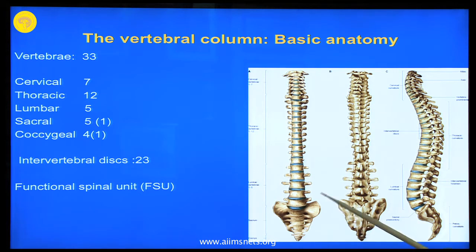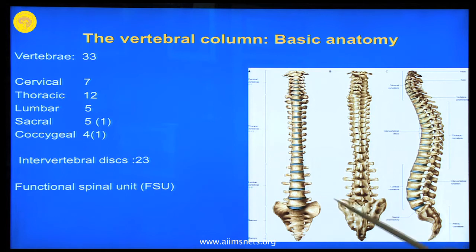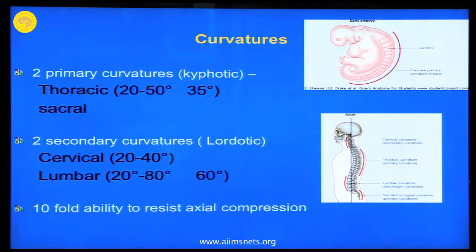The two adjacent vertebrae with their intervening intervertebral disc and the joints and the ligaments surrounding make one functional spinal unit.